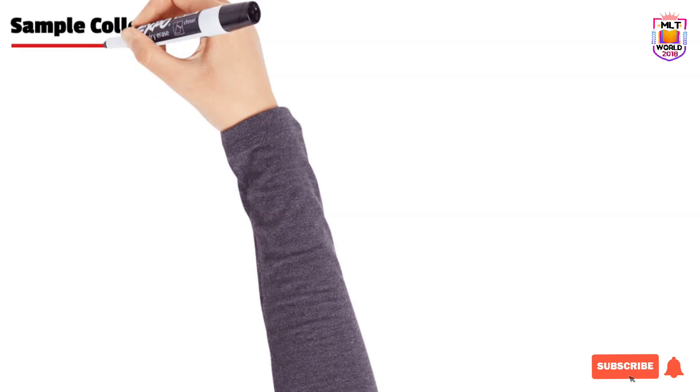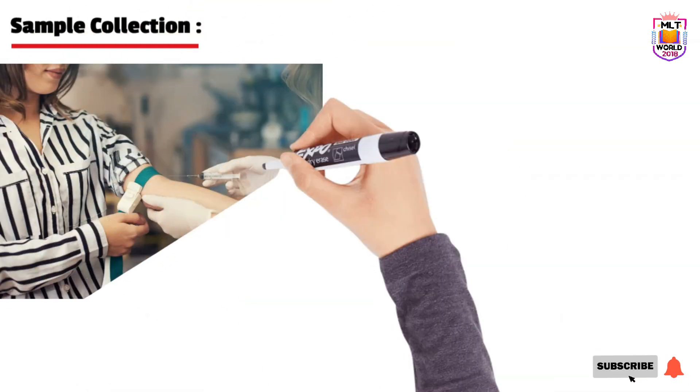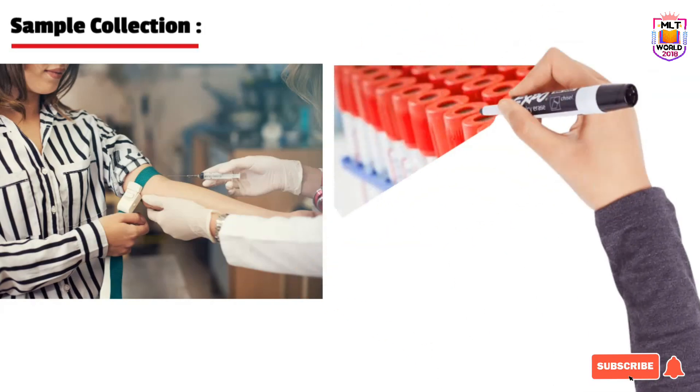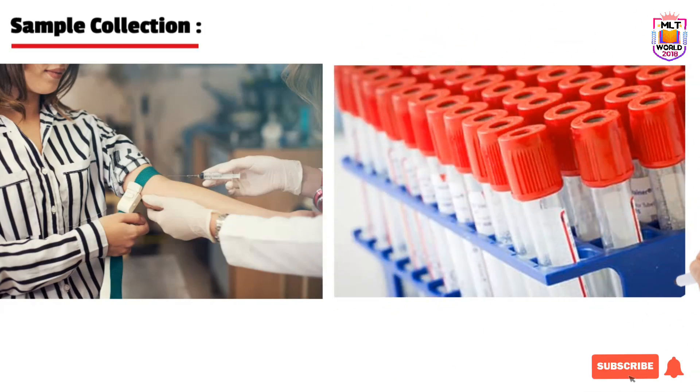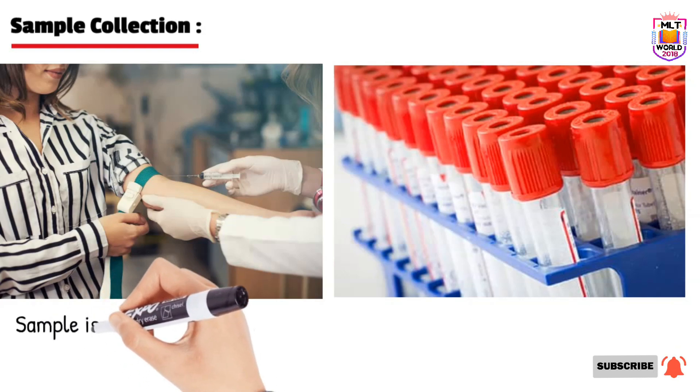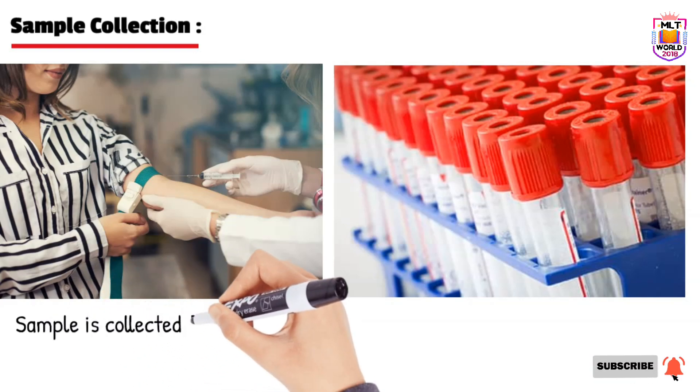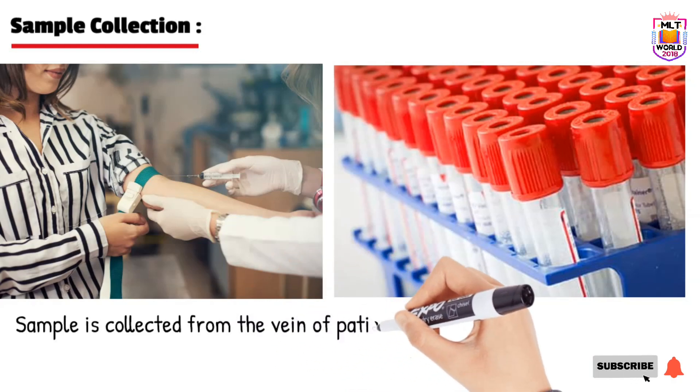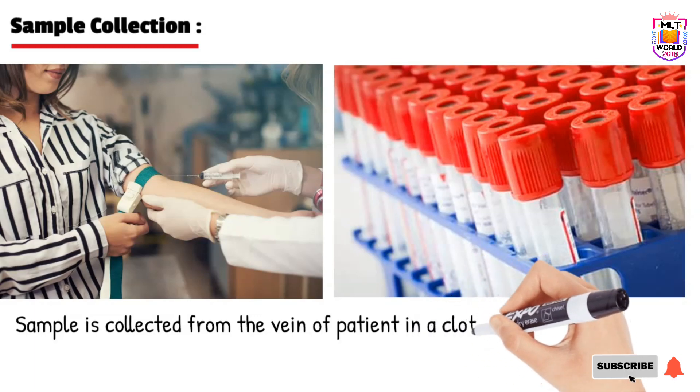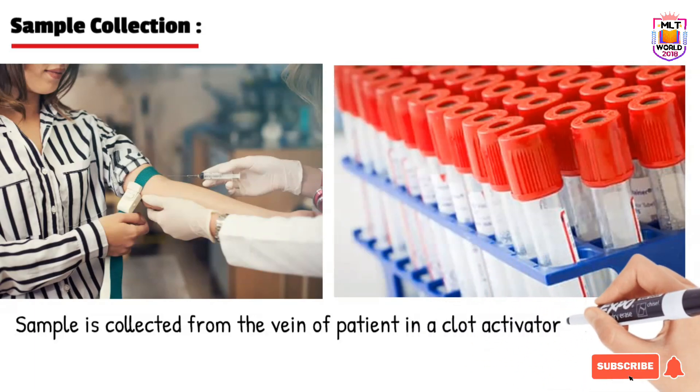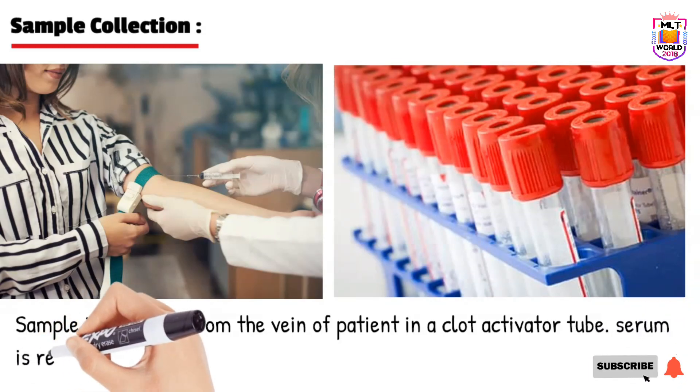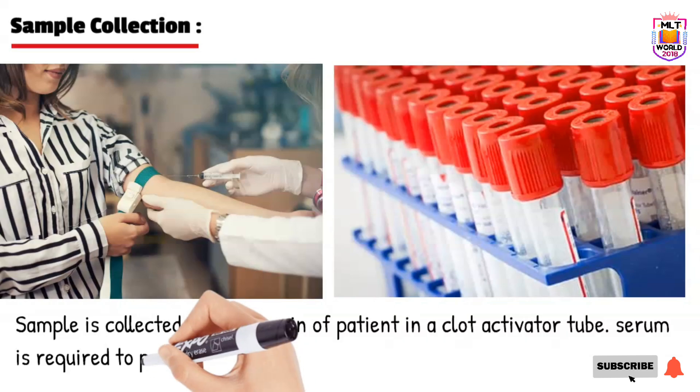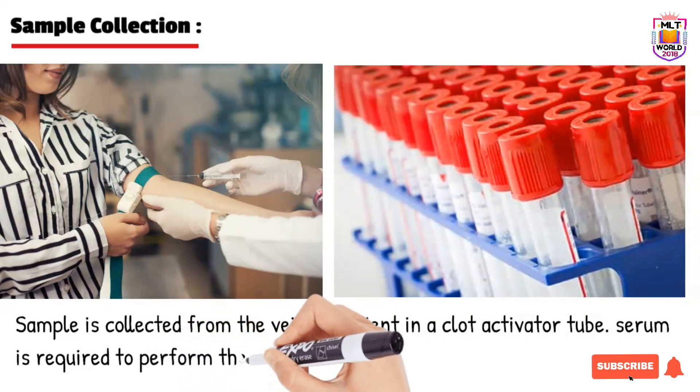Now what type of sample is required? AST is a blood test and blood is collected from the vein of the patient. Anytime you can collect the blood, fasting is not required, and blood is collected in a clot activator tube. When the blood reaches the lab, they will centrifuge it and from the serum this test is performed. So basically AST test is performed from the serum part of the blood.